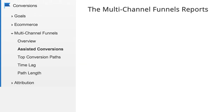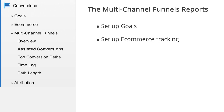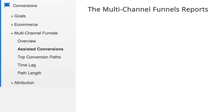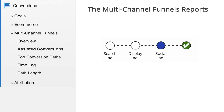In order to see data within the Multi-Channel Funnels reports, you first need to set up goals, e-commerce tracking, or both. Remember, in Google Analytics, conversions and e-commerce transactions are typically credited to the last campaign, search, or ad that referred the visitor when he or she converted. This is called last-click attribution and is how conversions are attributed in most Google Analytics reports.